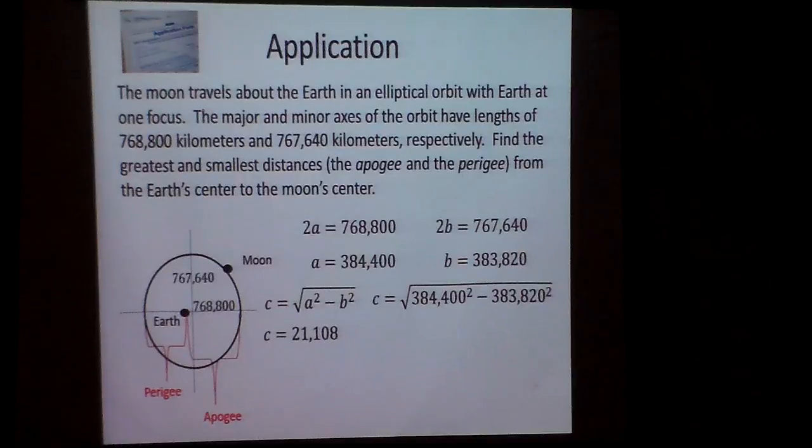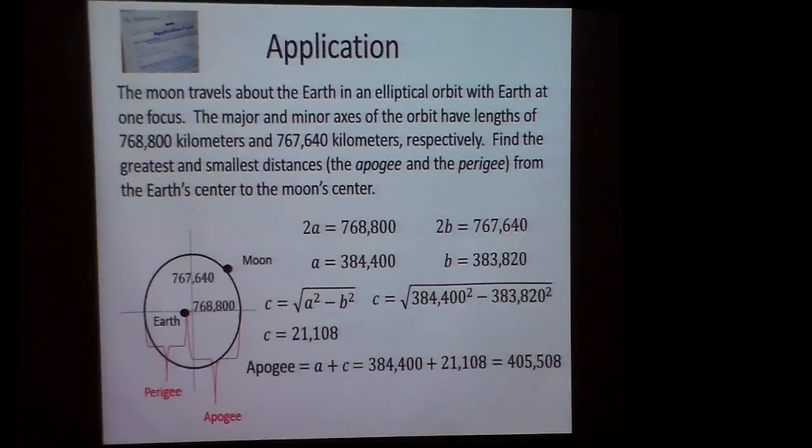All right, now like I said, all I need to do to find the apogee is take this A and add the C. Wow! 405,508. And the perigee will be the A value minus the C value, because that's the distance from here to here.